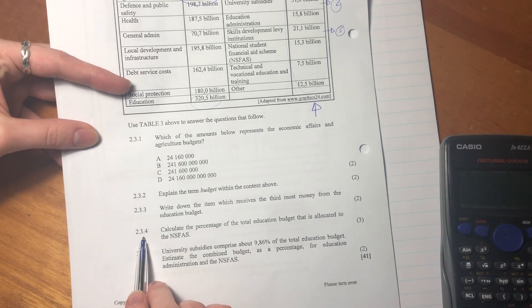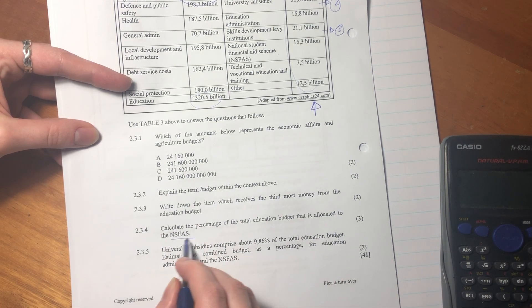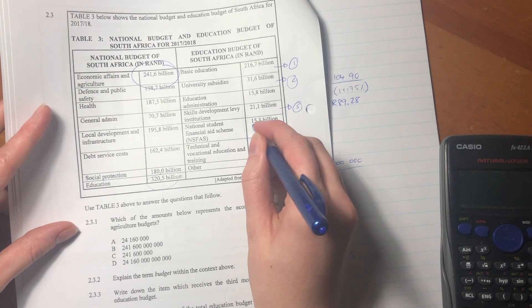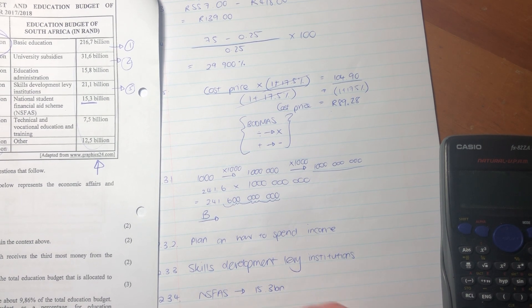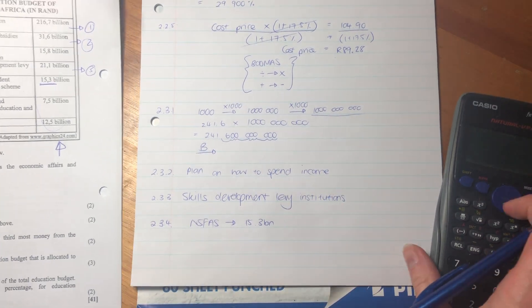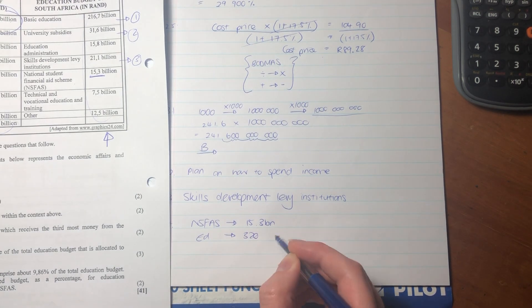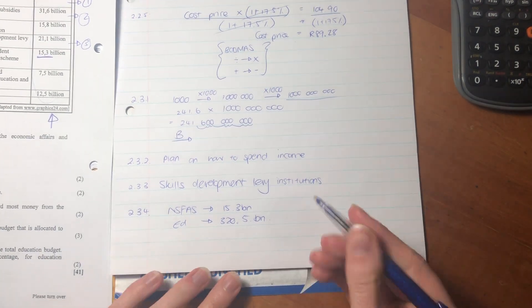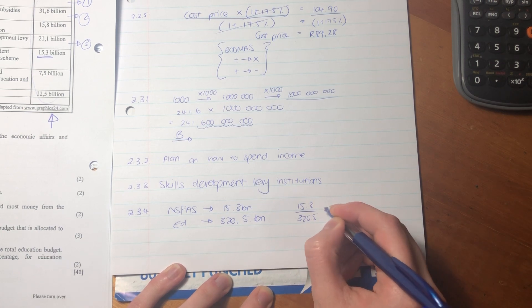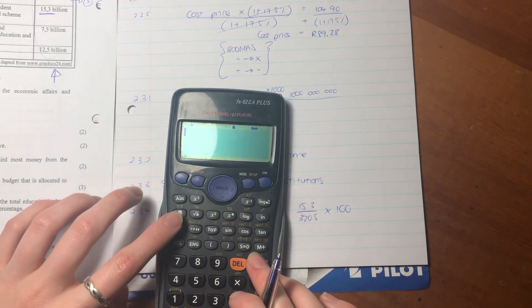Let's now go to 2.3.4. It says calculate the percentage of the total education budget that is allocated to NASFAS. So we see that NASFAS is 15.3 billion. But the total education budget we know over here is 320.5 billion. So we need to say to get a percentage, we say 15.3 over 320.5 times 100. It's important because they've asked us to put it as a percentage.